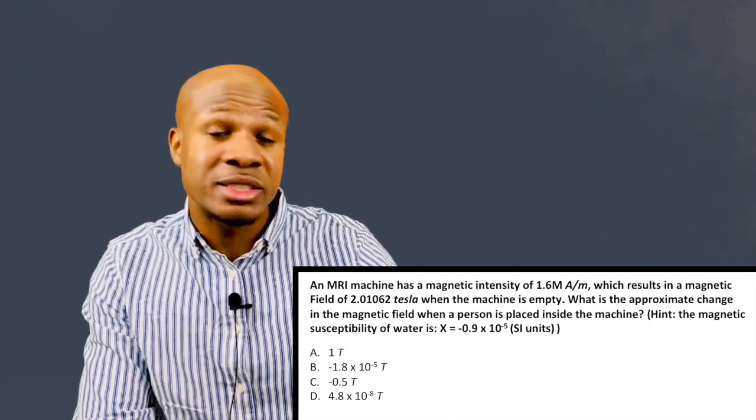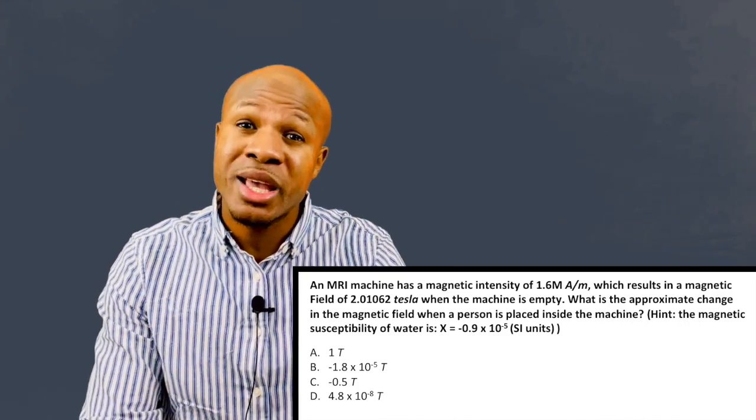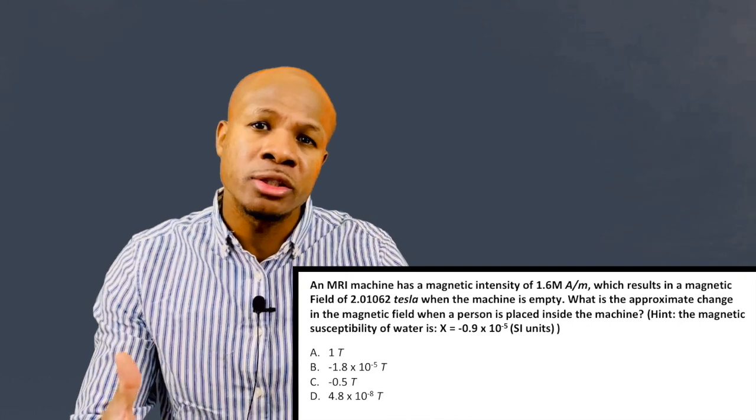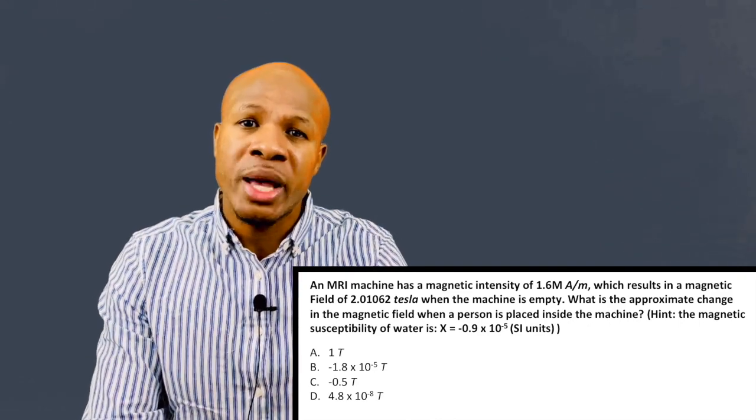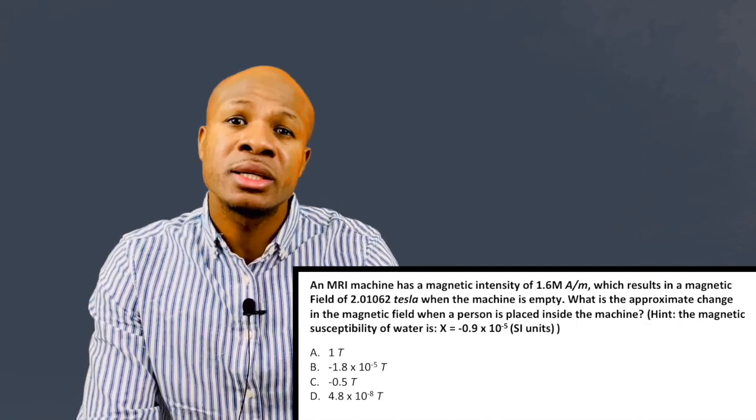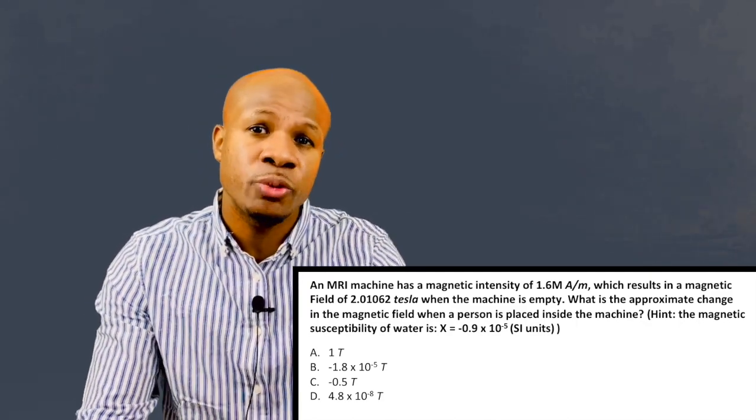We're mostly water and water is magnetic. It's not very magnetic, it's 0.9 times 10 to the negative 5, but it's somewhat magnetic. It's going to respond to a magnetic field and there are enough water molecules within our body that we will actually get a signal that we can detect and turn into an image. To get the magnetic field within the MRI machine when a body is placed within it, we just need to multiply the magnetic intensity times the magnetic susceptibility of water.